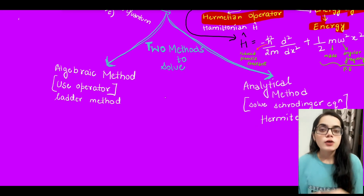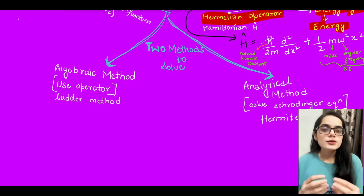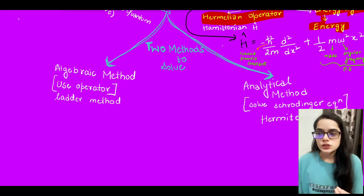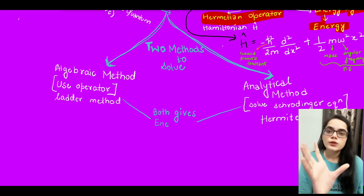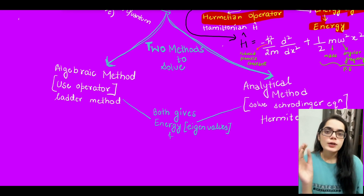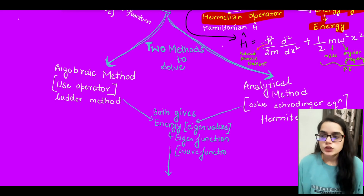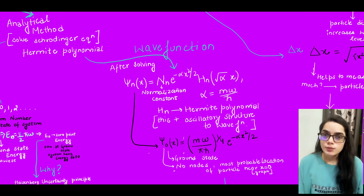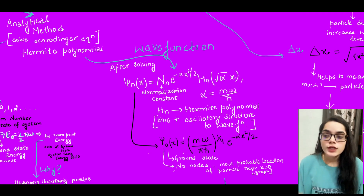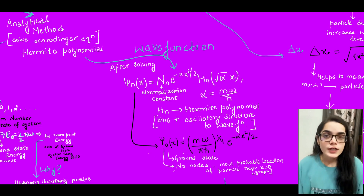The analytical method is a bit difficult. We apply the Hamiltonian operator on the wave function and solve it. I have shown you the resulting wave function, which contains Nₙ as the normalization constant and Hₙ as the Hermite polynomial. Hermite polynomials add oscillatory structure to the wave function. When we put n = 0, we get the ground state wave function.